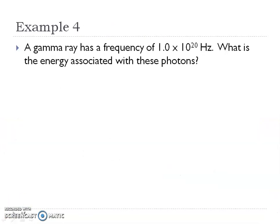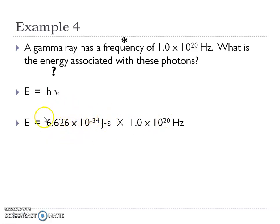Example four: a gamma ray has a frequency — what is the energy of these photons? Remember, energy is always associated with those photons of light that are given off. Which formula would be best to use? Hopefully you chose the energy formula because I'm solving for energy and I'm given frequency. I'm plugging and chugging — H is Planck's constant, always going to be the same. Make sure you can use that EE button correctly on your calculator. Energy is always going to be in joules. The seconds and seconds to the negative one power cancel out, and you're left with joules.